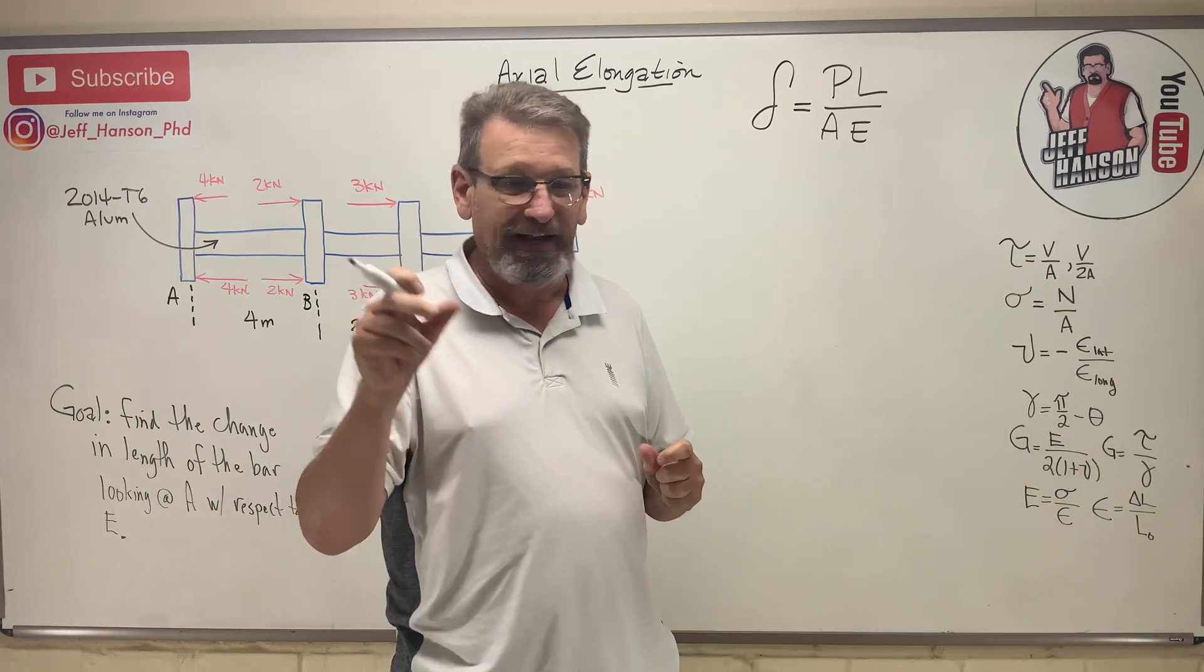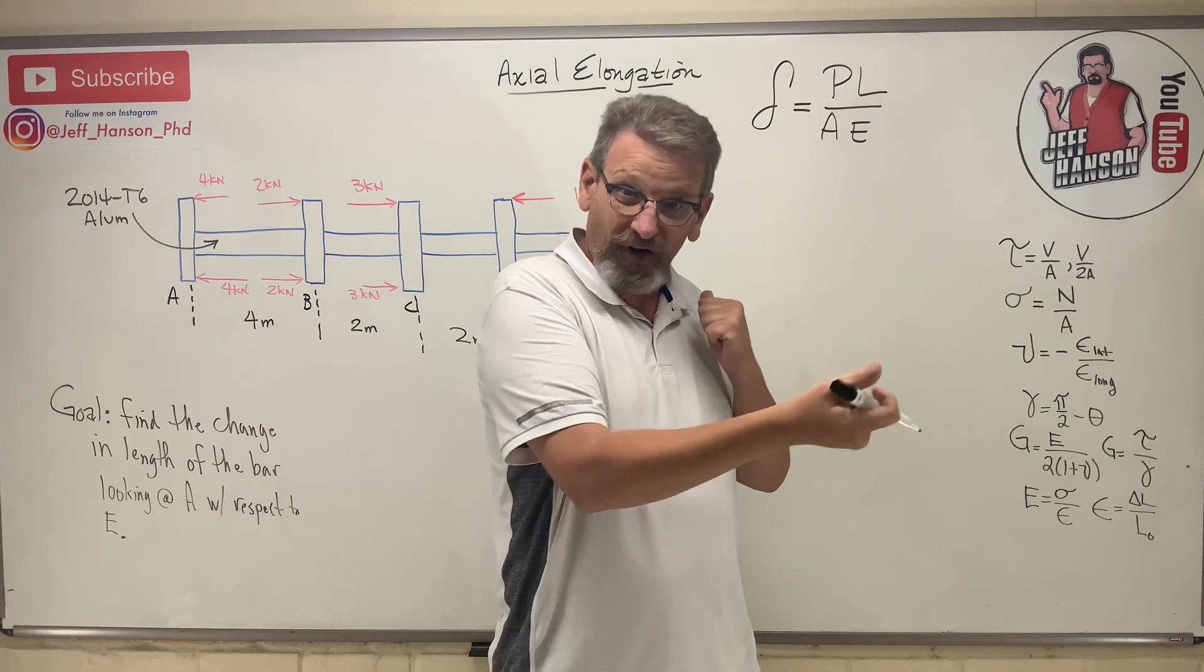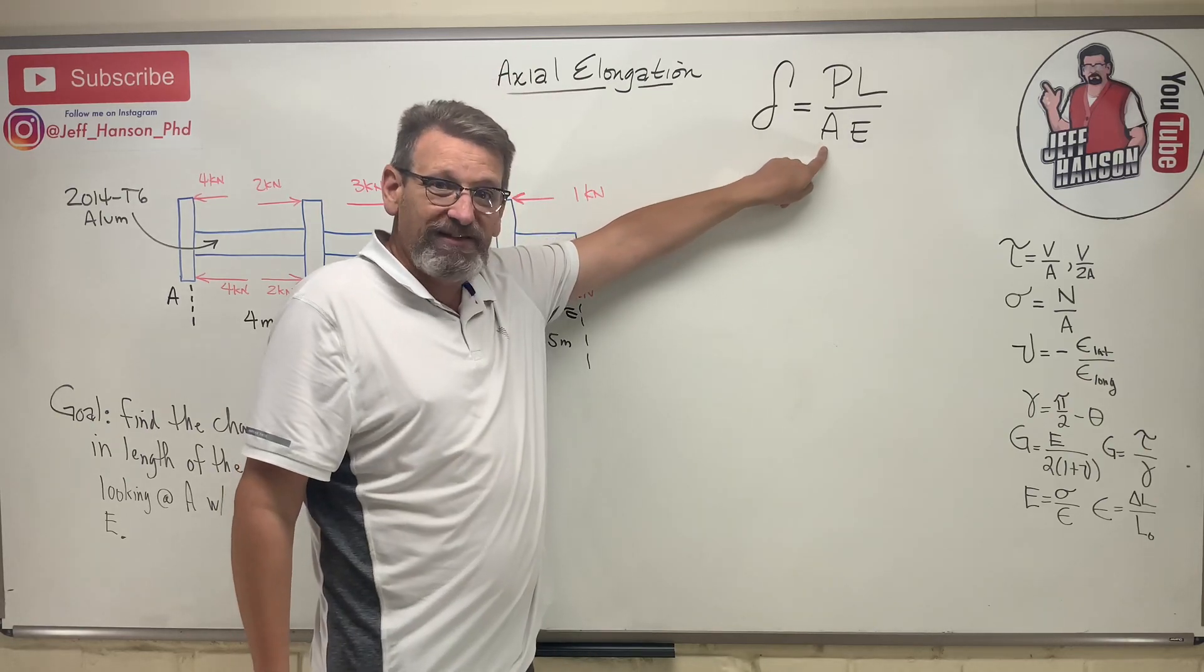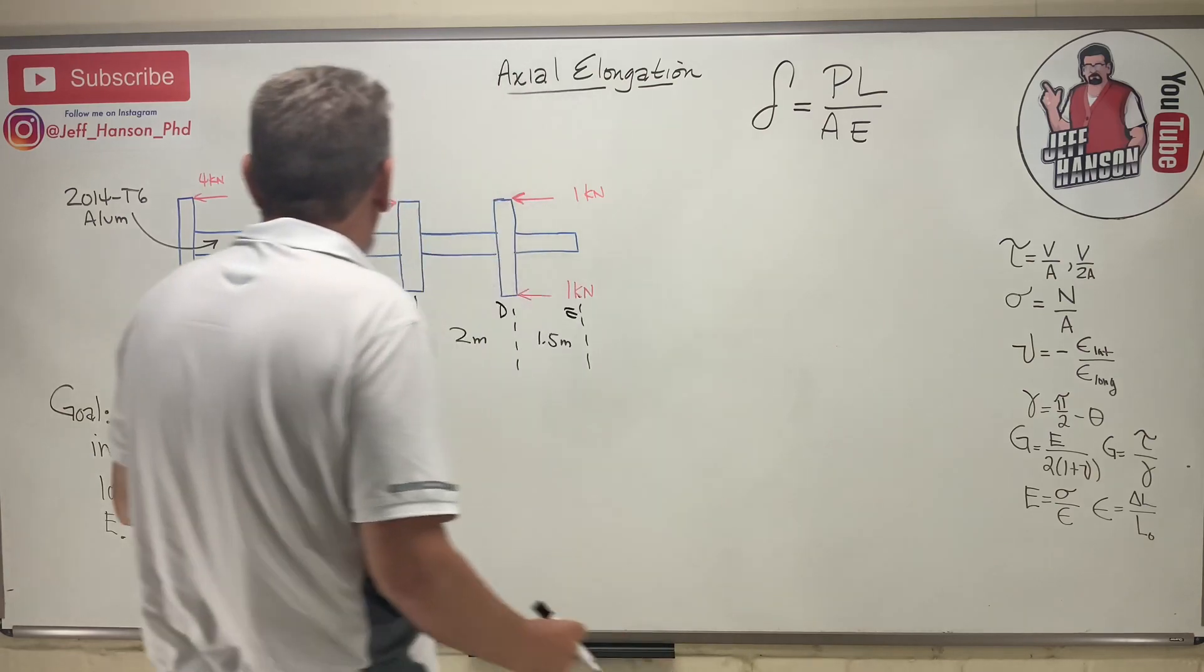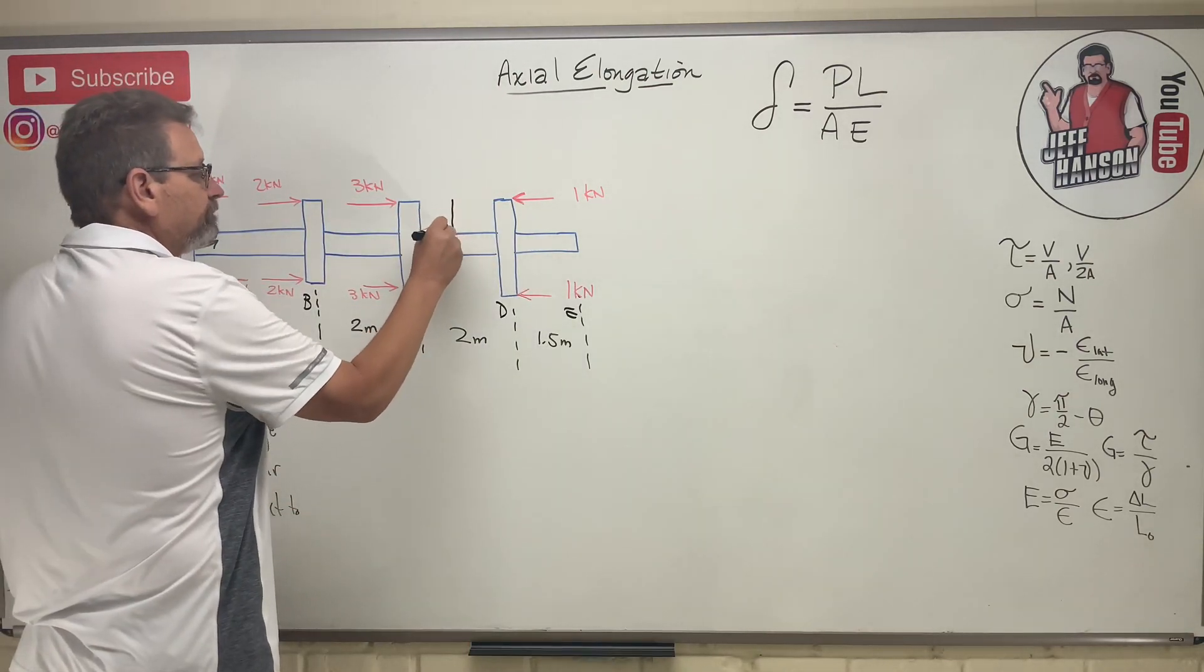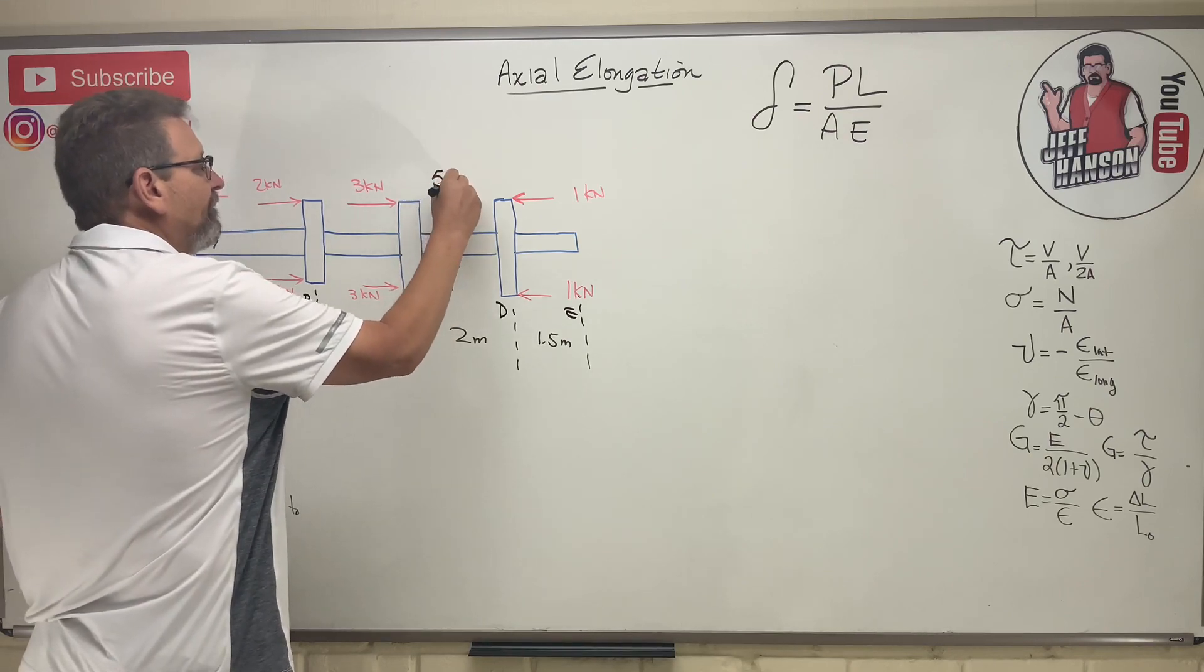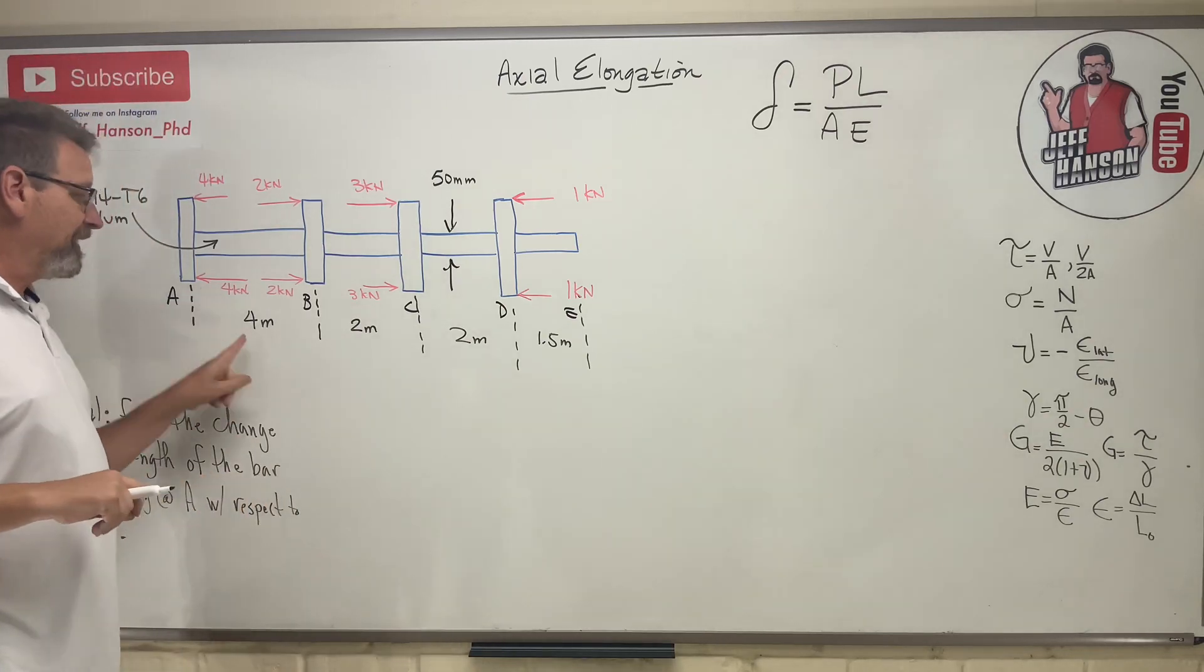The more of something I have when it's loaded, the more it's going to stretch. So length is definitely important. A is just the cross-sectional area. For this guy here we have a 50 millimeter diameter.